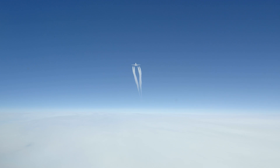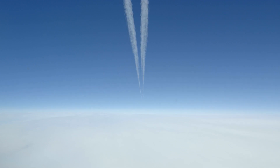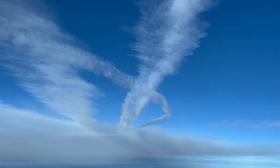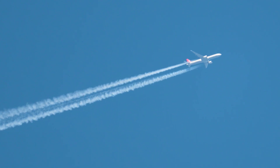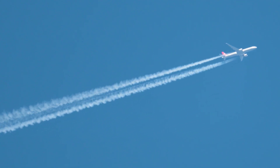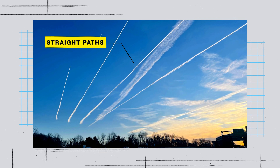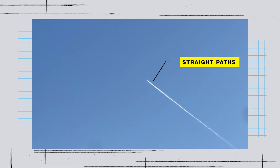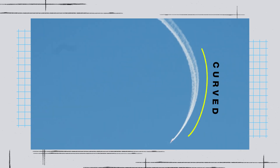Contrails can form year round, often melting and disappearing in a matter of seconds. But when the air is cold and extra humid, they can persist hours after the plane has flown by. While they often appear as straight white lines, they can also form circular shapes from turning planes.